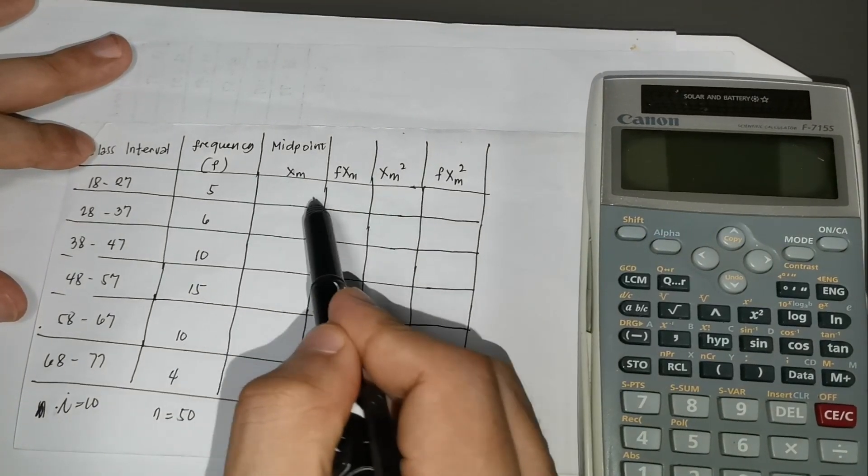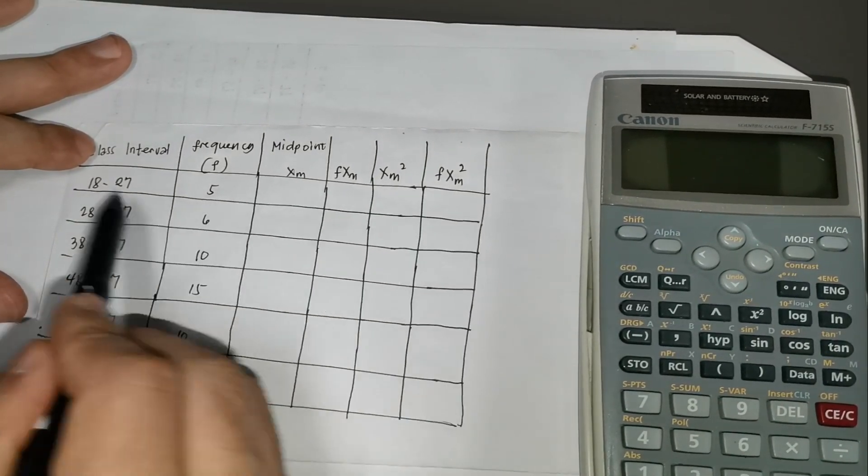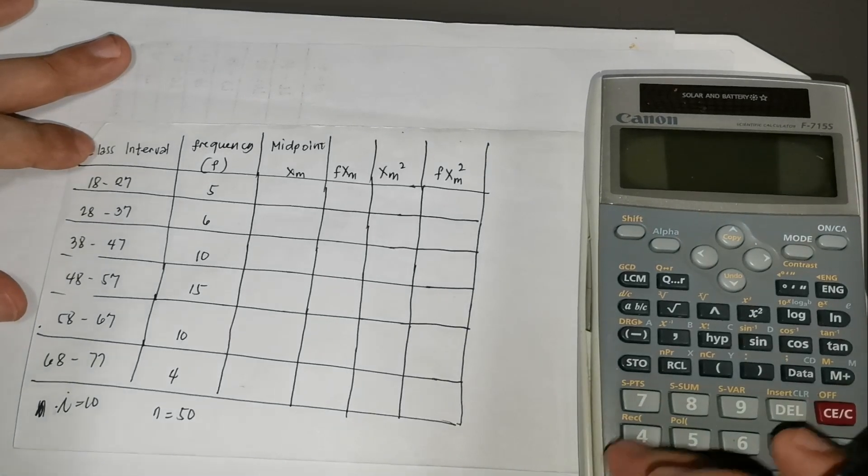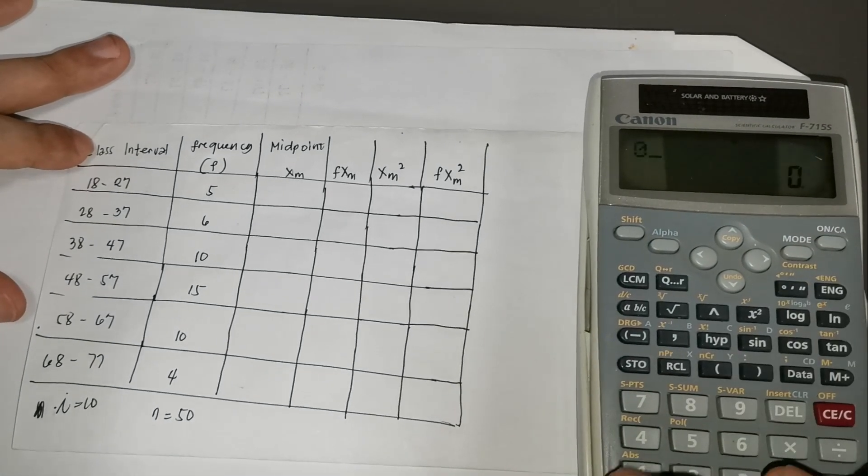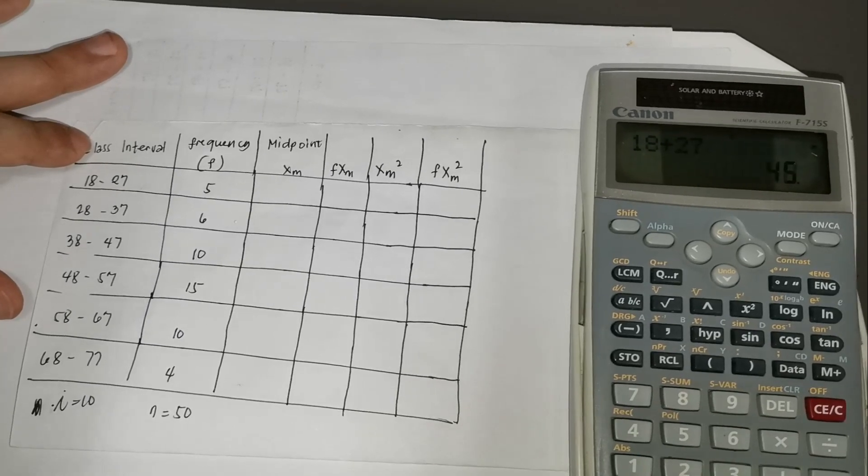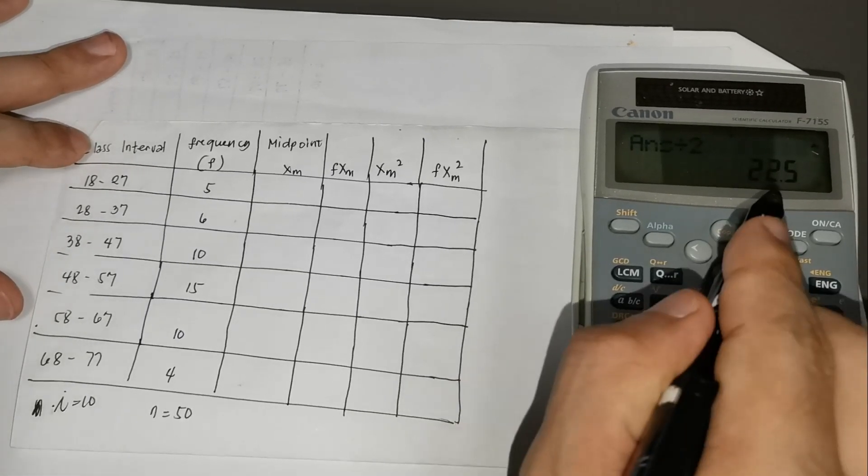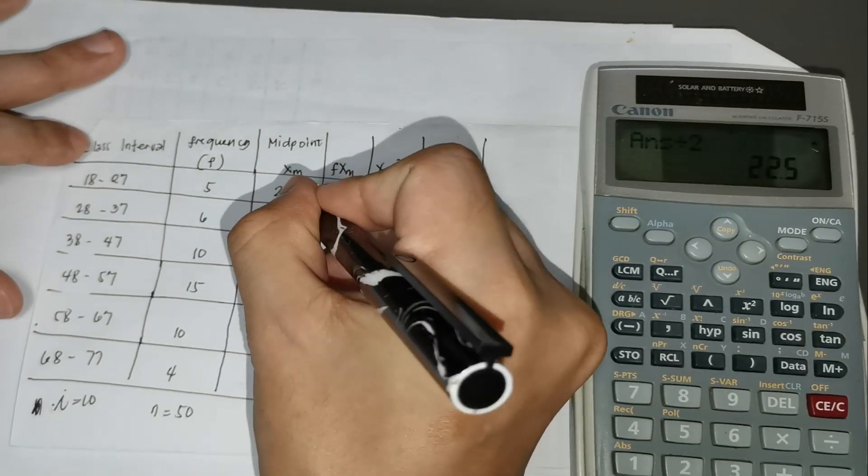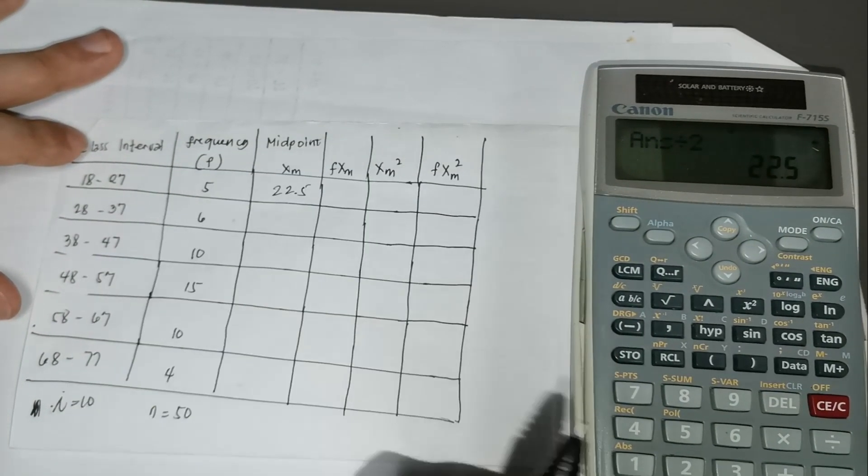To get or to complete this column, this is simply the average of our limits. So, you have 18 plus 27 divided by 2 you have 22.25, that is the first one.